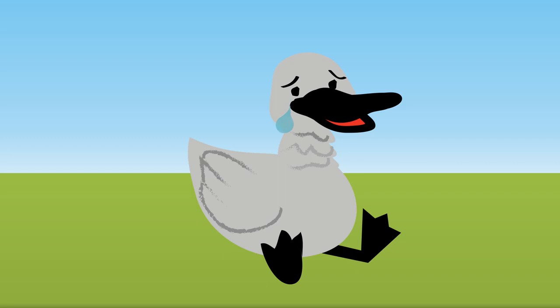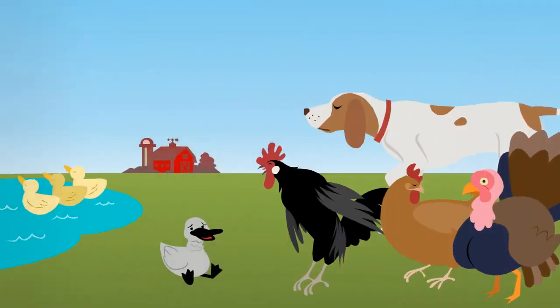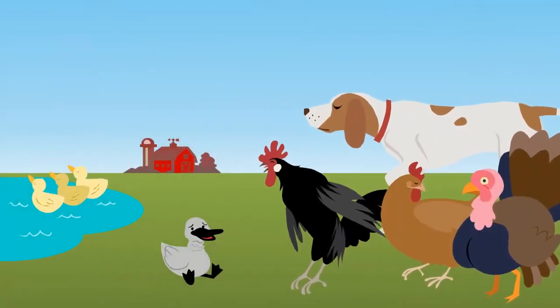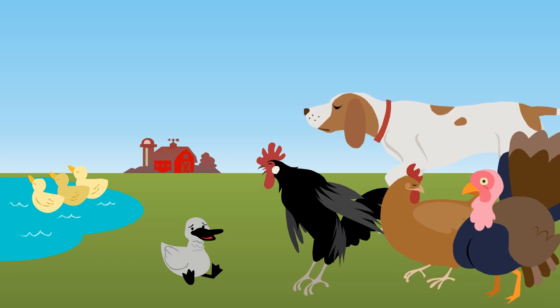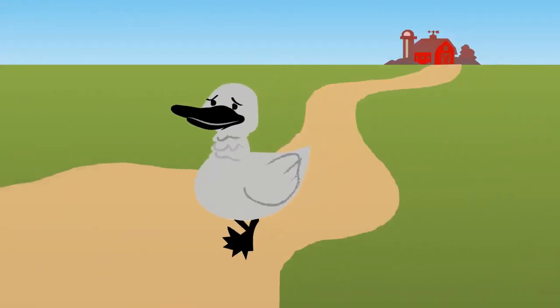The Ugly Duckling was very sad. Everyone made fun of him because he did not look like his brothers and sisters. So he ran away from home.